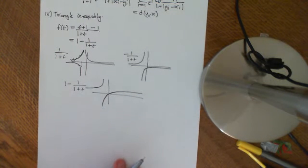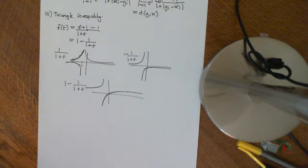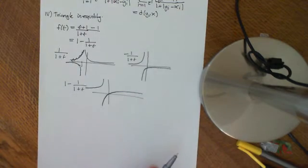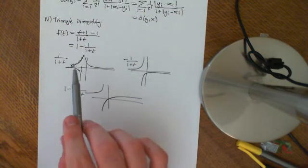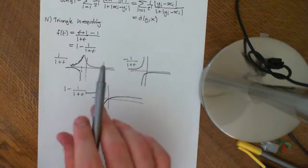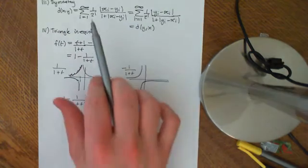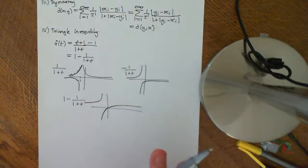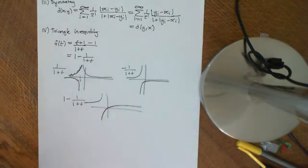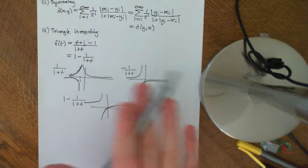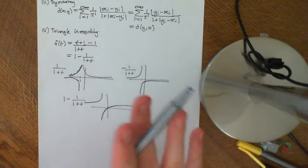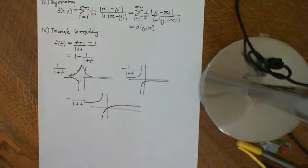Welcome to part 2 of this video on defining a metrical structure on the sequence space containing all sequences of complex numbers. We're looking at this function f of t, and the reason we are doing this is we're trying to come up with a very clever inequality that's going to allow us to prove the triangle inequality. I'm going to derive the inequality first, and then show you how it can be used. You'll just have to suffer watching a bit of unmotivated maths at first, and then you'll see how important it is.